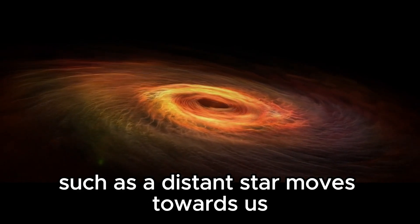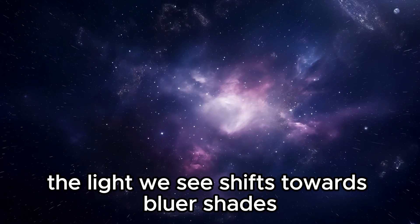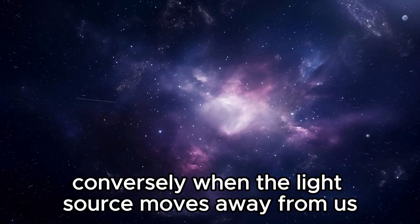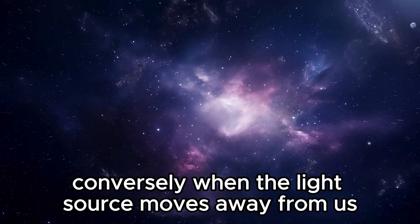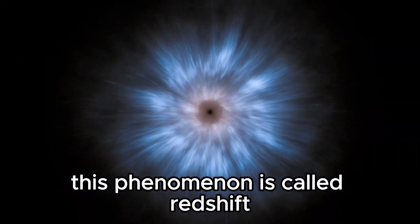The same is true for light. When a light source such as a distant star moves towards us, the light shifts towards bluer shades. Conversely, when the light source moves away from us, the light shifts towards redder hues. This phenomenon is called redshift.